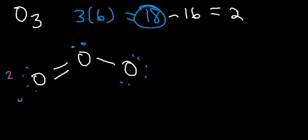So this is 2, 4, 6, 8, 10, 12, 14, 16, 18. That's the Lewis structure of the ozone molecule.